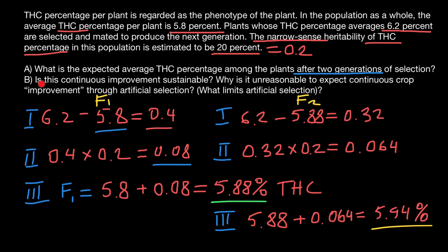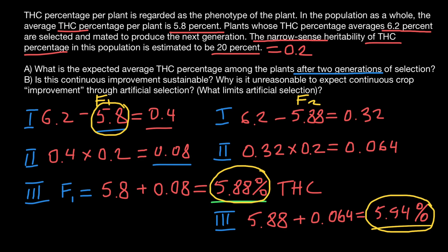Now let's read question B: Is this continuous improvement sustainable? Why is it unreasonable to expect continuous crop improvements through artificial selection? What limits artificial selection? Look at the three numbers: we start with a mean of 5.8%. After one generation — which can take one year in the Northern Hemisphere, or two harvests per year in places like India — THC content increases to 5.88%. After two years, it increases to 5.944%. As you see, after two years the increase is very small, negligible.